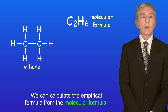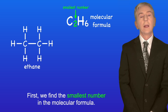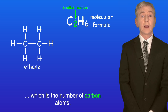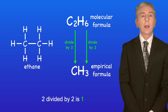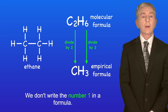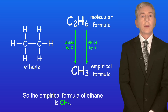We can calculate the empirical formula from the molecular formula. First we find the smallest number in the molecular formula. In the case of ethane, the smallest number is two, which is the number of carbon atoms. We now divide all the numbers by the smallest number: two divided by two is one and six divided by two is three. We don't write the number one in a formula, so the empirical formula of ethane is CH3.